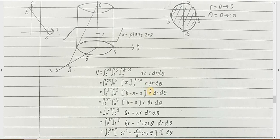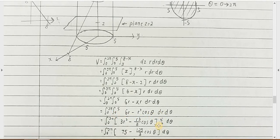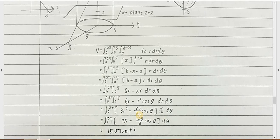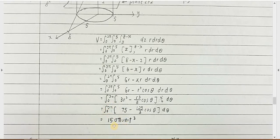After defining the DZ interval from 2 to 8 minus x, solve for r. You replace x with r cosθ so the expression becomes 8 minus r cosθ. Perform the integration with respect to r, then with respect to theta using a calculator. The final answer is 155 cubic units, where cubic units represents the volume.